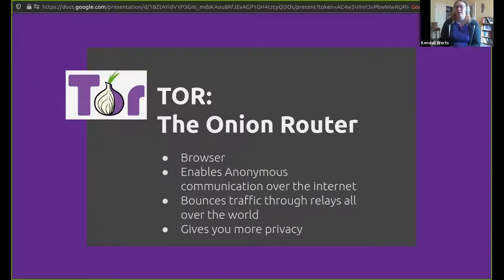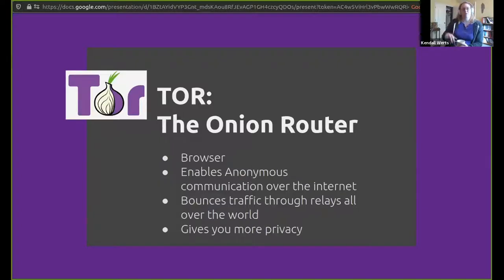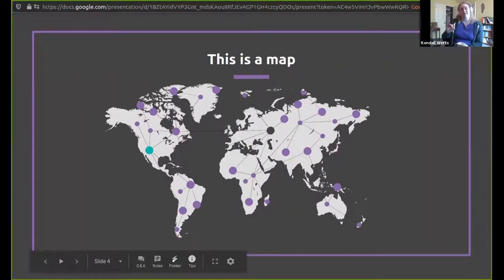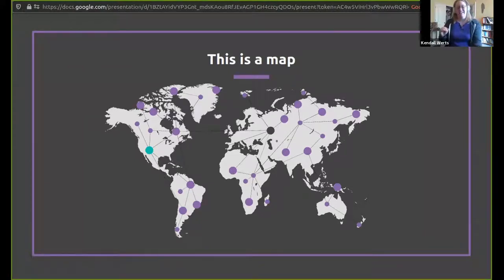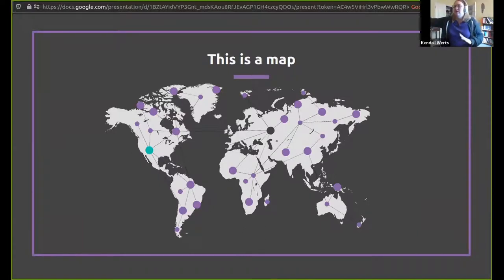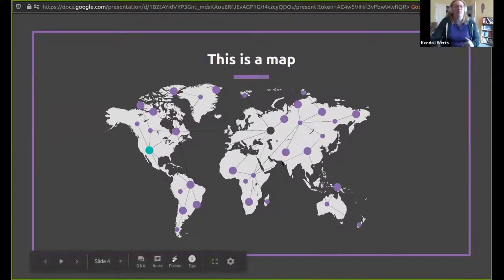Tor stands for the Onion Router, which I didn't know for a long time. It's called an Onion Router because of the way that it works. It is a browser — you can use the service other ways as well, but the browser is probably the most accessible way. It enables anonymous communication over the internet and does this by bouncing traffic through relays all over the world to give you more privacy. I've seen a movie or TV show where they track internet traffic bouncing from one server to another — that's basically what Tor is.